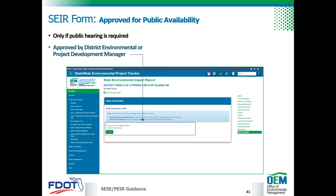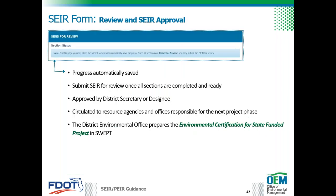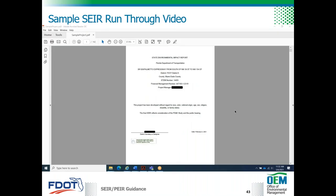For projects where documents need to be displayed for public availability such as for a public hearing, an option for public availability review can be selected. The district environmental manager or project development manager will then sign the form electronically to accept the project for public review. Once the SEER is completed and documents uploaded, the district environmental or project development manager will certify it and submit it to the district secretary or designee for approval. Once approved, it's circulated to those resource agencies and offices responsible for the next phase.